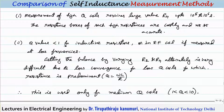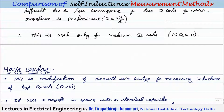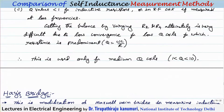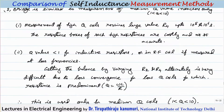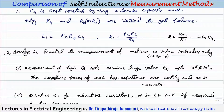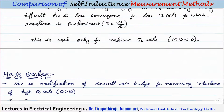The disadvantage is that a variable capacitor is required. Practically, the capacitor is kept constant and only R4 and either R2 or R3 are varied to get the balance.